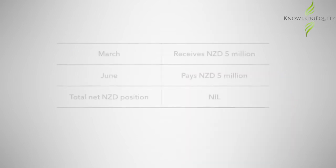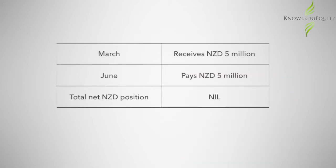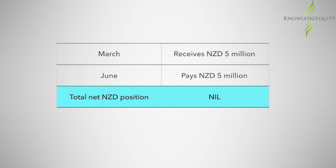Consider an Australian organization that has regular exposures to the New Zealand dollar over the next six months. In March it receives five million New Zealand dollars, and in June it pays five million New Zealand dollars. The total net New Zealand dollar position is nil. We can see that the net New Zealand dollar exposure for the whole period is zero, however there are still timing mismatches between the relevant receipts and payments.